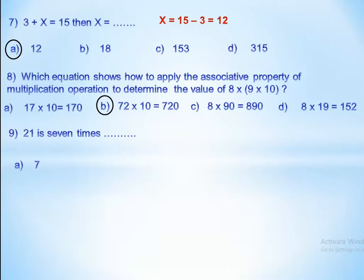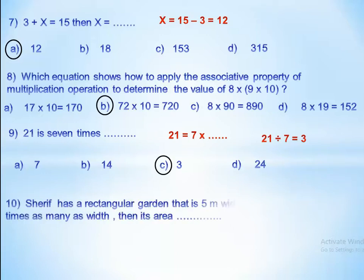21 is 7 times what number? We look for a number that multiplied by 7 gives 21. The answer is 3. Sharif has a rectangular garden that is 5 meters wide and its length is 2 times as many as the width.